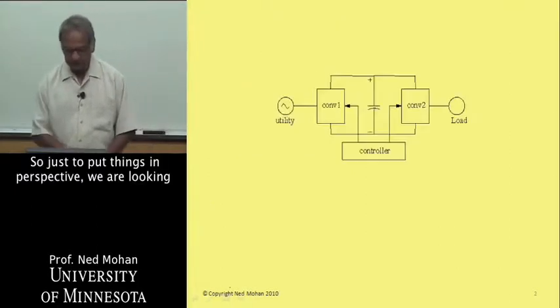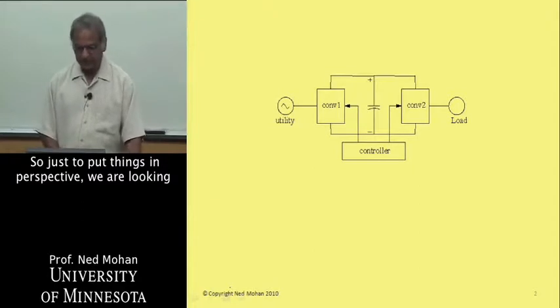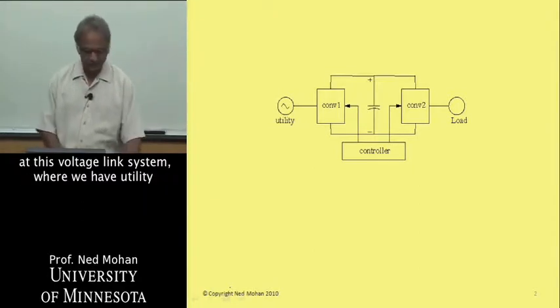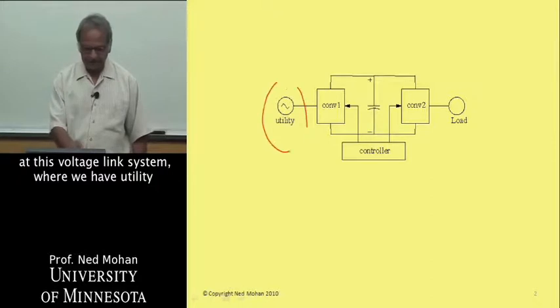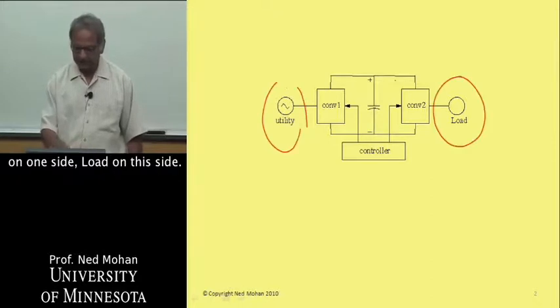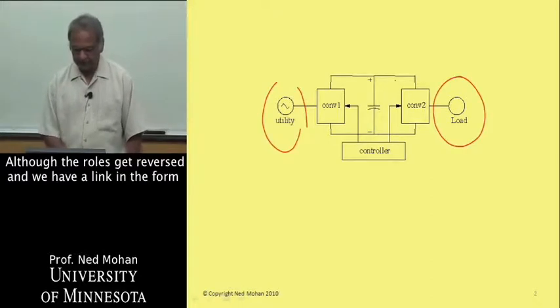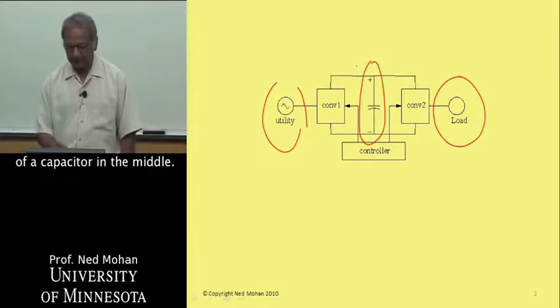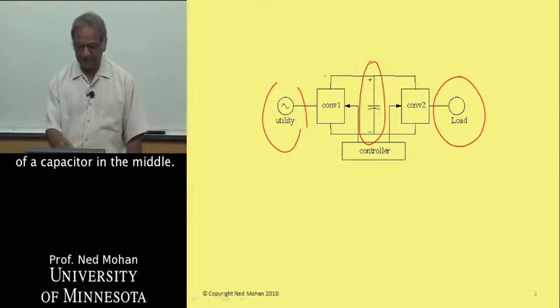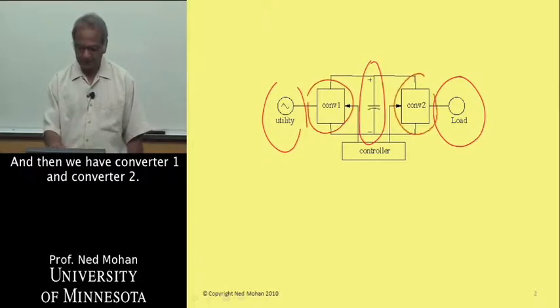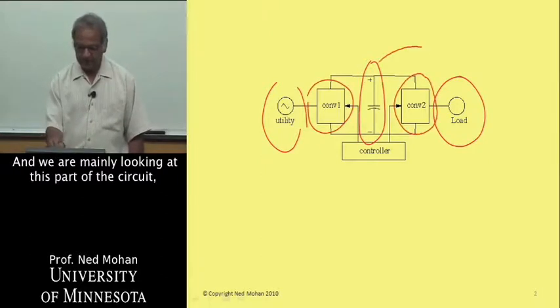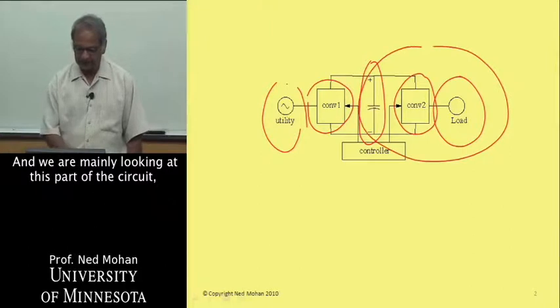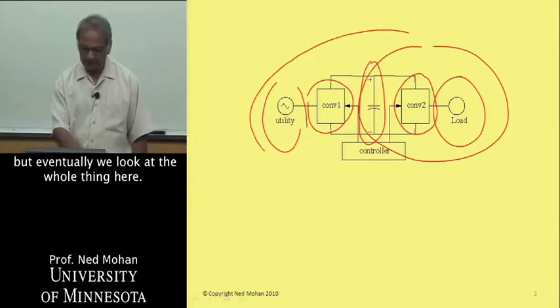Just to put things in perspective, we are looking at this voltage link system where we have utility on one side, load on this side, although the roles get reversed, and we have voltage link in the form of a capacitor in the middle, and then we have converter one and converter two. We are mainly looking at this part of the circuit, but eventually we'll look at the whole thing here.